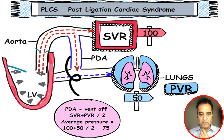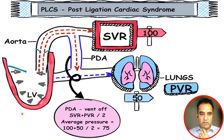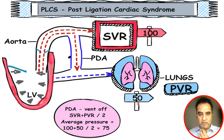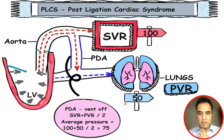This condition occurs when the HS PDA is surgically ligated. The LV of the preterm has been contracting and the blood is being pushed out through the aorta to the systemic channels and tissues. Some part of that blood is being bypassed through this HS PDA to the pulmonary circulation. Suppose your systemic vascular resistance is 100 and your pulmonary vascular resistance is 50.